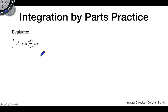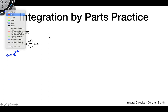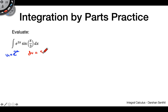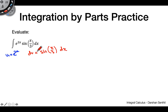New problem — this one is pretty interesting with a really cool twist at the end. Figure out a good choice for u and dv. For this problem, it actually doesn't matter which you choose for u and which for dv, because both are very easy to integrate and differentiate. I'm going to choose u equals e to the 2x, and dv equals sine of (x/3) dx.